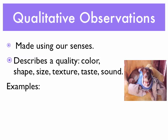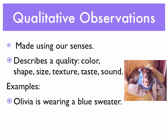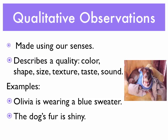Here are a couple of examples. First off, we have Olivia, our dog, who is wearing a blue sweater, so we're describing the color of that sweater. Olivia's fur is also very shiny — another qualitative observation.